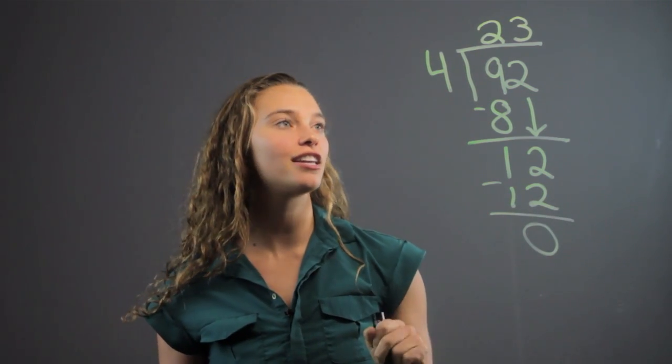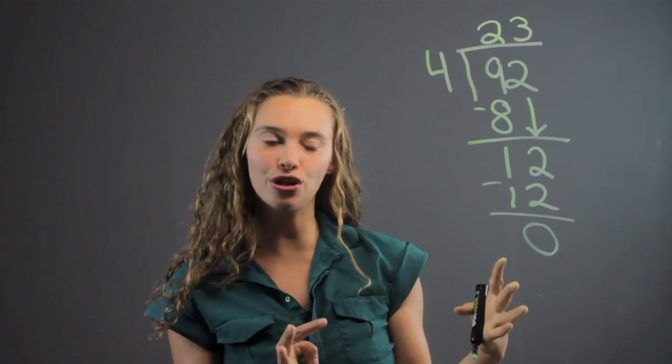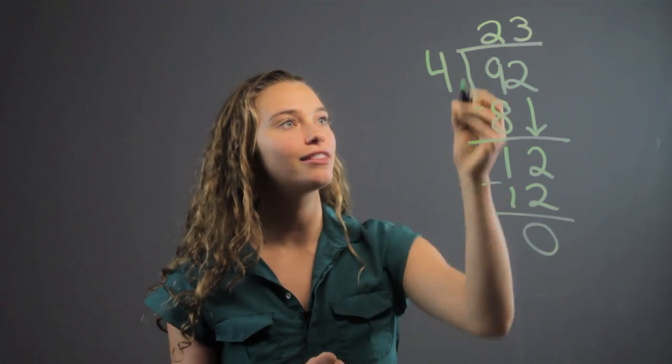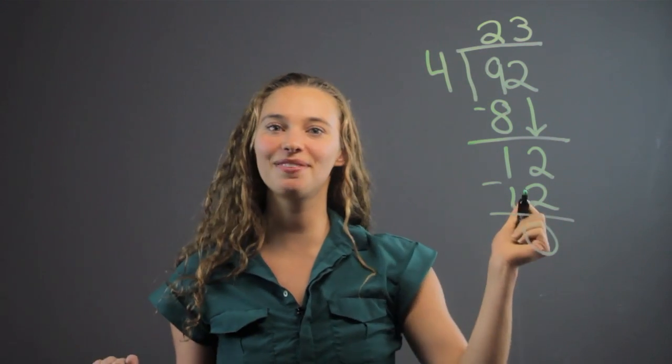If they have a remainder in third grade, we just have them write 'remainder' and whatever number, but in this case there's no remainder. So 23 is the answer to the problem: 92 divided by 4 is 23.